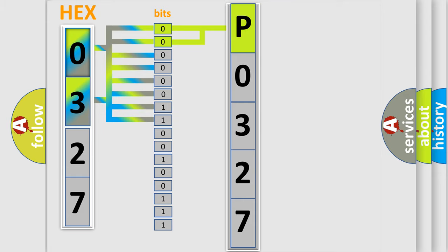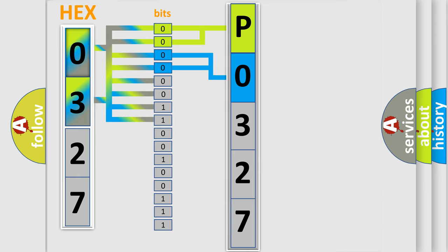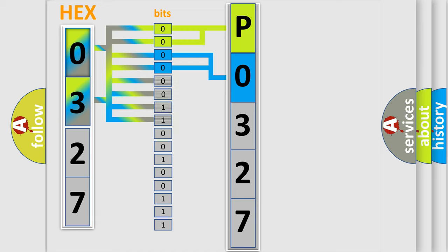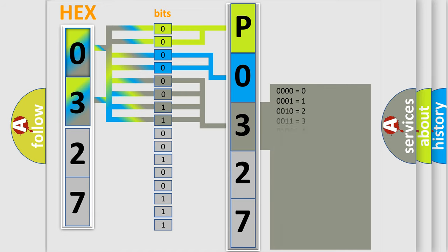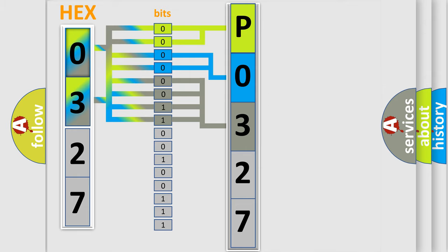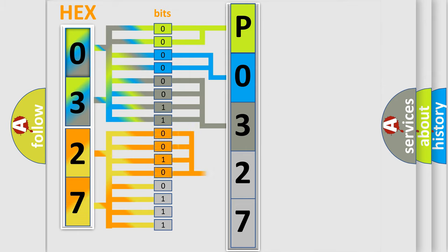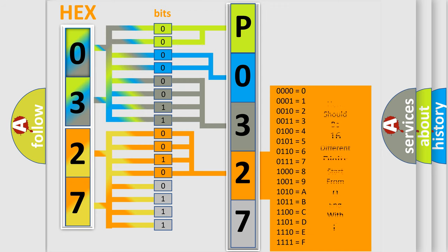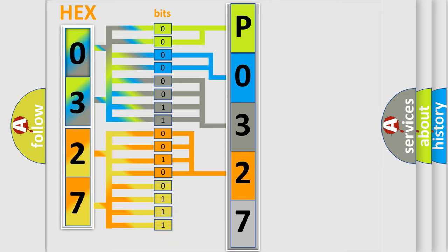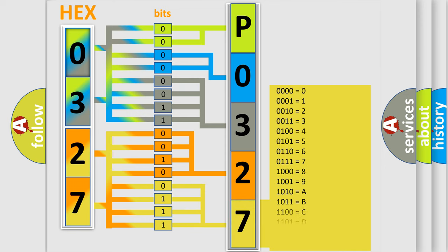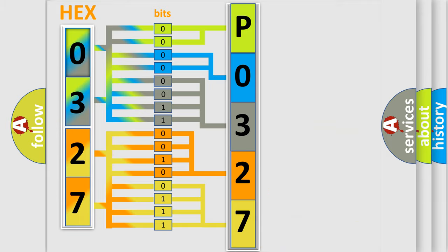The next two bits determine the second character. The last bits of the first byte define the third character of the code. The second byte is composed of a combination of eight bits. The first four bits determine the fourth character of the code, and the combination of the last four bits defines the fifth character. A single byte conceals 256 possible combinations. We now know in what way the diagnostic tool translates the received information into a more comprehensible format.